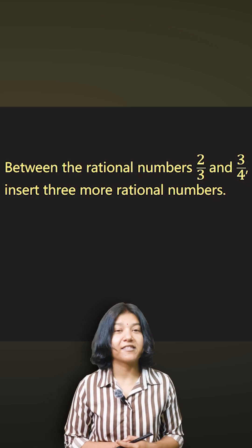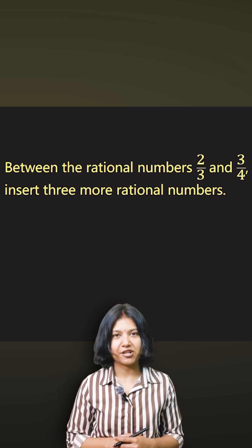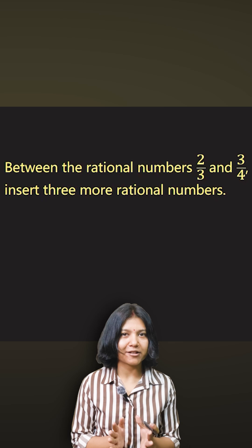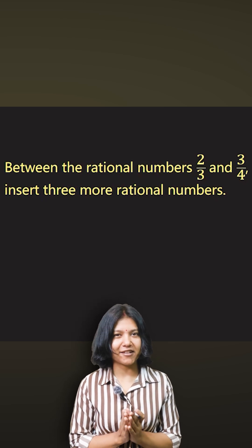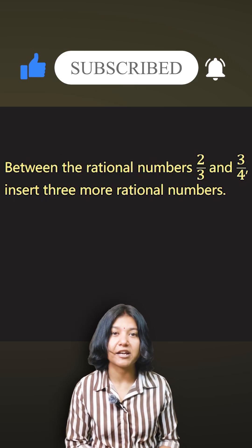You have been given two rational numbers and they want you to insert three more rational numbers. What is the exact way you can do it such that you get the exact number of rational numbers between the given two rational numbers?